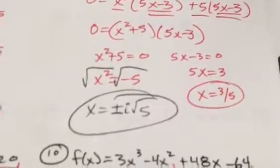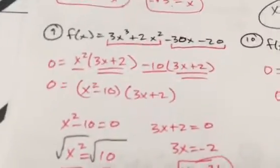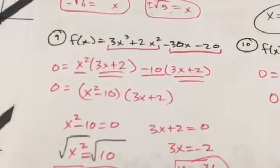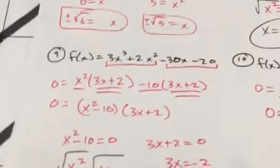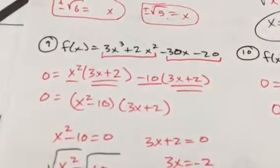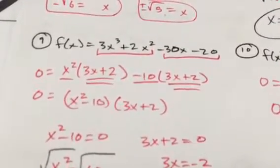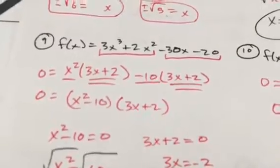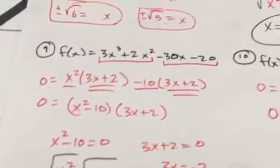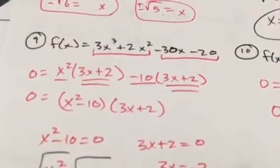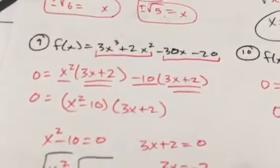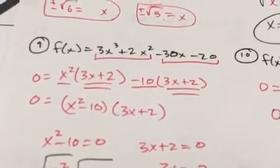Number 9: factor out the x² they both have in common from the first pairing, leaving 3x + 2. Bring down the same sign, minus. The second pairing begins with minus. Factor out -10. When you divide -30x and -20 by -10, you're left with 3x + 2 in one parenthesis.